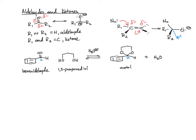Notice the nature of this arrow — these are equilibrium arrows. This tells us that we can favor either the reactants or the products based on Le Chatelier's principle. If we want to form the acetal, we can drive the equilibrium that way by removing water as it is formed. That's going to continuously drive this equilibrium towards the product.